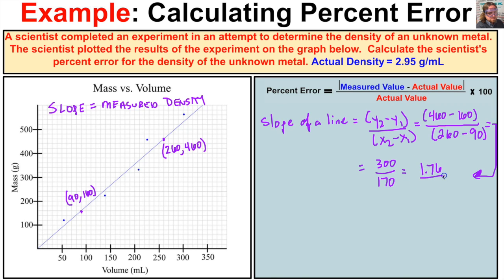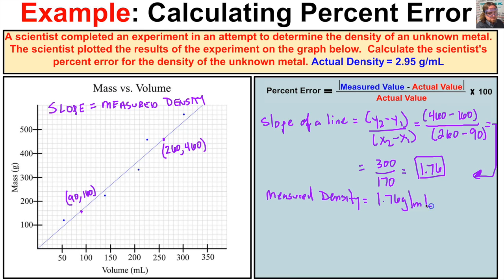300 divided by 170 gives us a slope of 1.76. This slope of the line — 1.76 — is also going to be the measured density of this unknown metal: 1.76 grams per milliliter. We have grams on the y-axis and milliliters on the x-axis, so the units work out to grams per milliliter.